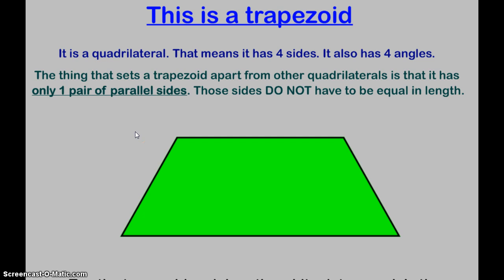Another shape is called a trapezoid. The thing that sets a trapezoid apart is that it only has one pair of parallel sides. So this top and bottom are parallel,